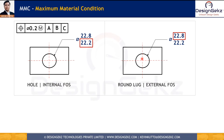For an external feature of size such as a round lug, it will have more material when produced at the higher size of 22.8. So it is not about the largest or smallest value — it is about the limit at which the feature has maximum material. For the hole, MMC is 22.2, and for the round lug, MMC is 22.8.